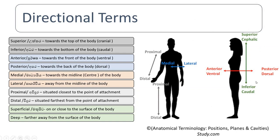You can pause this video and write down and memorize these things. Superior means towards the top of the body; inferior means towards the bottom. Anterior means front; posterior means back. Medial means towards the midline; lateral means away from the midline. For proximal and distal, there should always be a point of attachment — proximal means near to the point of attachment, distal means farthest from the point of attachment.